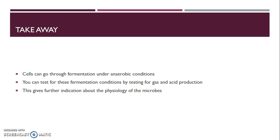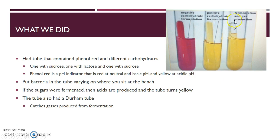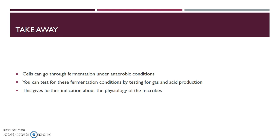The takeaway from this experiment is that cells can go through fermentation. Don't confuse this with hydrolysis of carbohydrates, which involves cutting polymers into monomers. Fermentation and oxidative respiration take those glucose monomers and use them as energy — either through oxidative phosphorylation or through fermentation, producing acids like we saw here. You can test for fermentation conditions by testing for gas and acid production using the pH indicator and Durham tube, which gives an indication about the physiology — the genetics and enzymes — of the microbes.